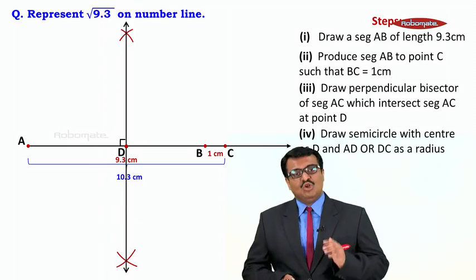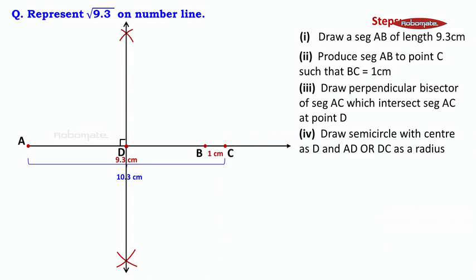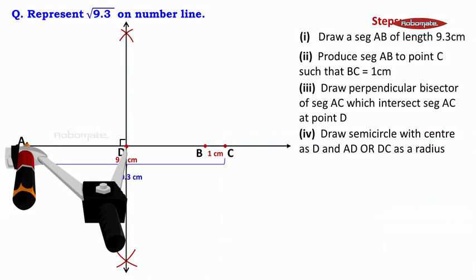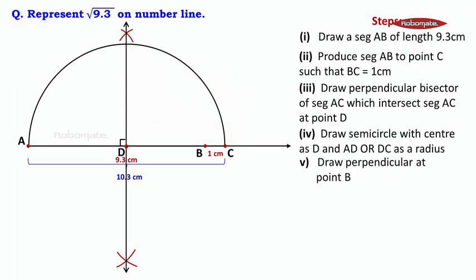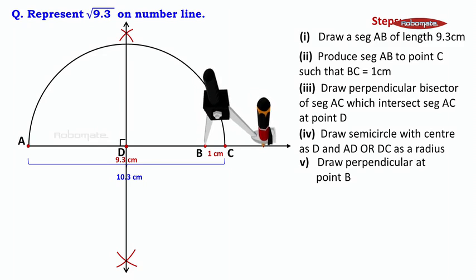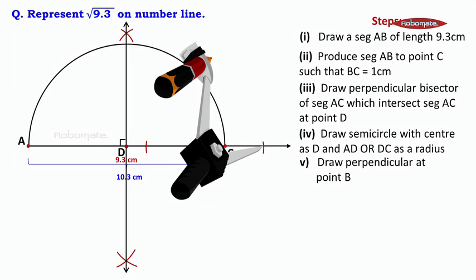Fourth step: draw a semicircle with centre D and radius AD (or DC). We keep the needle of the compass at D and the pencil at A and draw a semicircle. After drawing the semicircle, the next step is to draw a perpendicular at point B. We cut arcs on either side of B — on the right side and on the left side — and then draw the perpendicular.